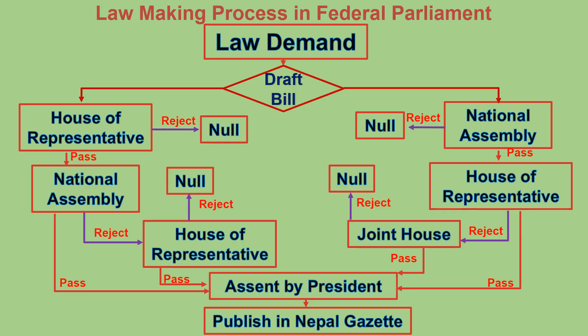Here is the diagram of the law-making process of the federal parliament in Nepal. As we have two houses — the upper house is the National Assembly and the lower house is the House of Representatives — we can present a bill in either house. If we present the bill in the House of Representatives and it passes, it is sent to the National Assembly. If the National Assembly passes the bill, it is sent to the President and published in the Nepal Gazette.